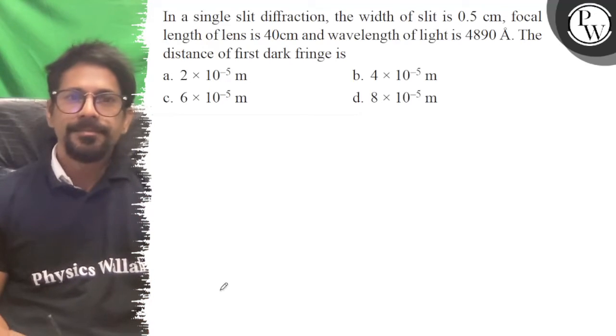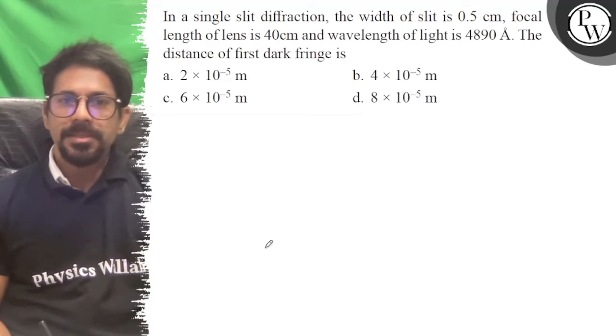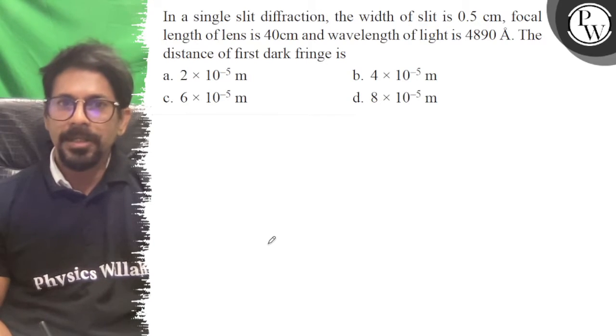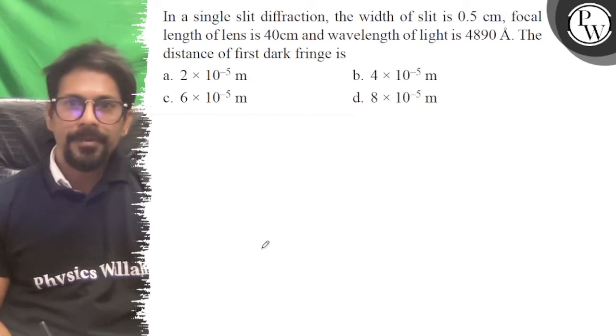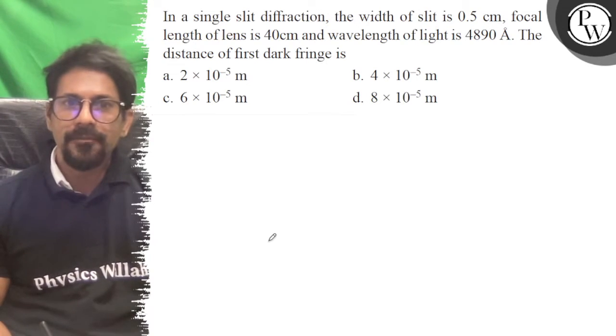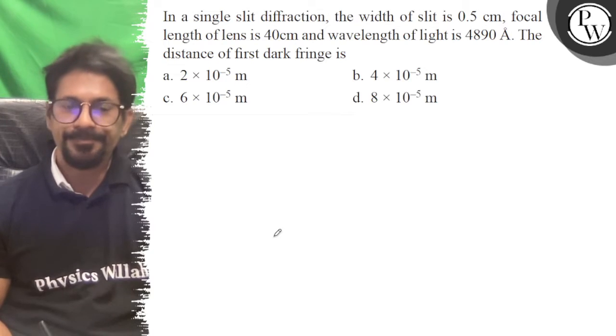Hello, it is a question. In a single slit diffraction, the width of the slit is 0.5, focal length of lens is 40, wavelength of light is 4890, and the distance of first dark fringe is to be found.